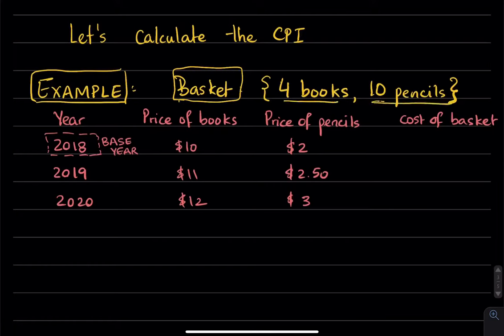This is to say that on average, an American consumes four books and ten pencils. And when we're thinking about macroeconomics, we would obviously be thinking about many more consumers. But right now, let's roll with these numbers.